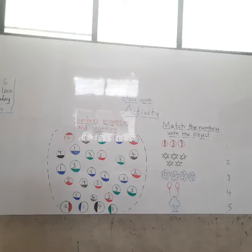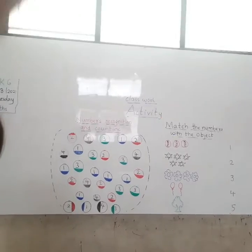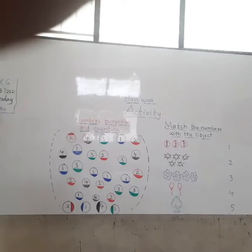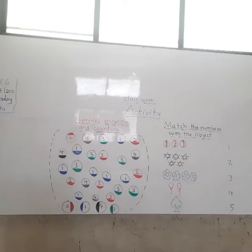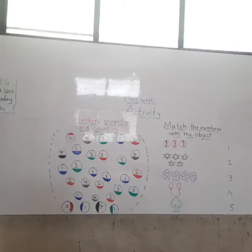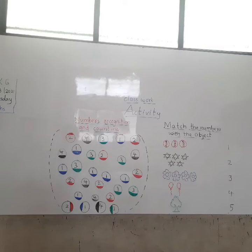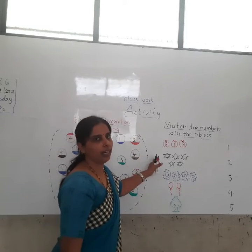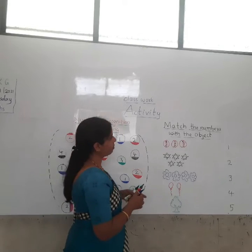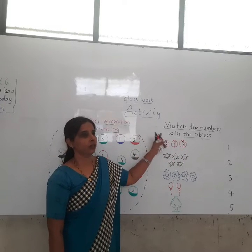This activity is completed. Here you can learn numbers recognition, colors identification, and counting numbers. Yes, children, understood? Then we are going to do the next activity — that is match the numbers with the objects. Match the numbers with the objects.